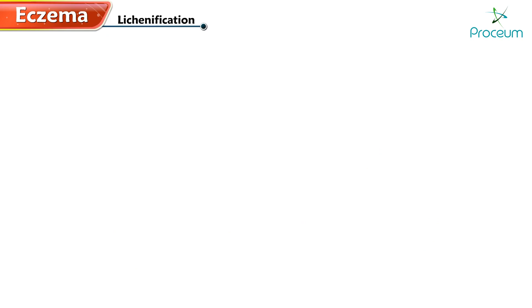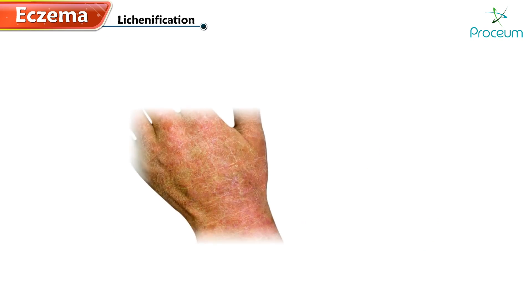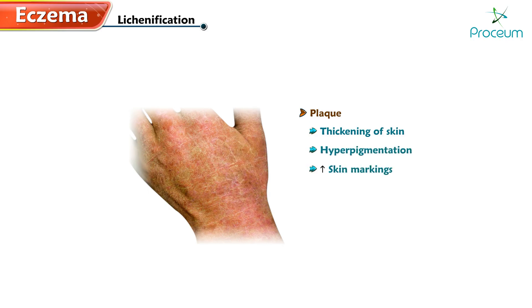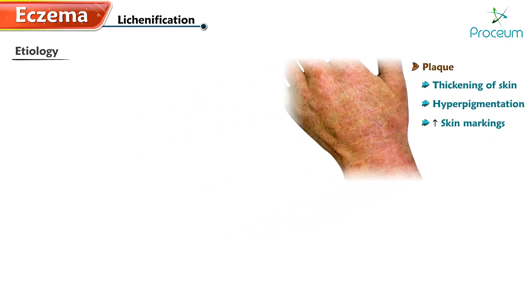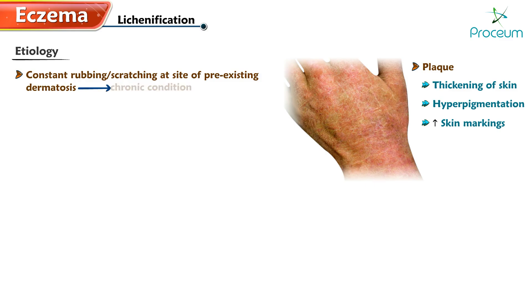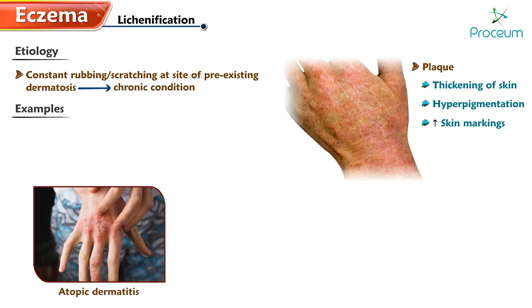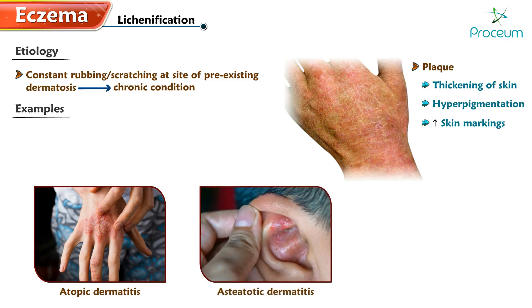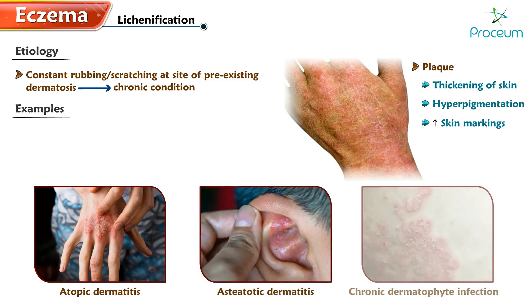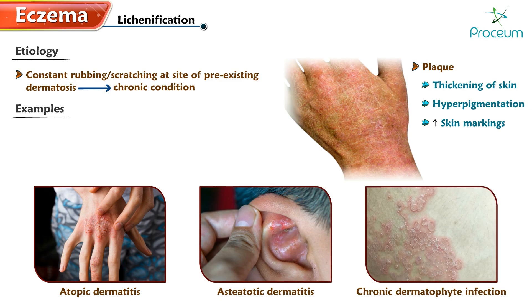Let's learn more about lichenification. It's a plaque characterized by thickening of the skin, hyperpigmentation, and increased skin markings. Lichenification is caused by constant rubbing or scratching at the site of a pre-existing dermatosis and indicates a chronic condition. Notable examples include atopic dermatitis, osteototic dermatitis, and chronic dermatophyte infection.